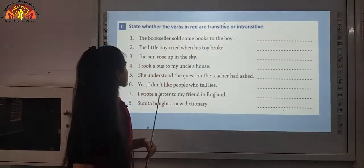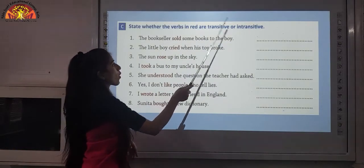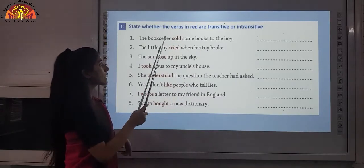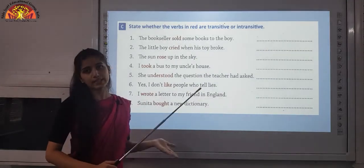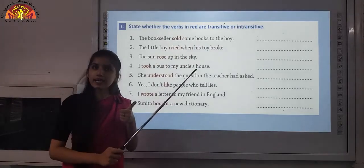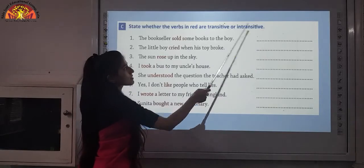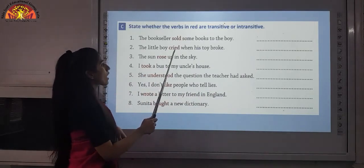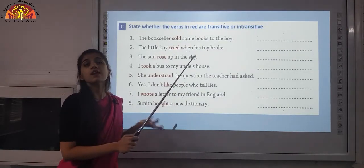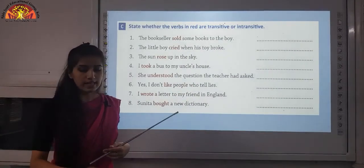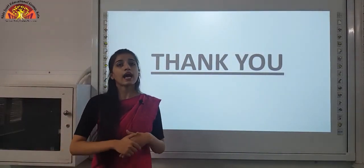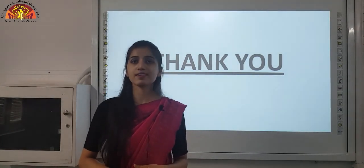Now let's look at the exercise: state whether the verbs in red are transitive or intransitive. The bookseller sold some books to the boy — sold what? Some books. We get an answer, so sold is a transitive verb. The little boy cried when his toy broke — cried for what? There is no direct object, so cried is an intransitive verb. I hope you all have understood this chapter. Stay fit, stay at home, and thank you for watching this video.